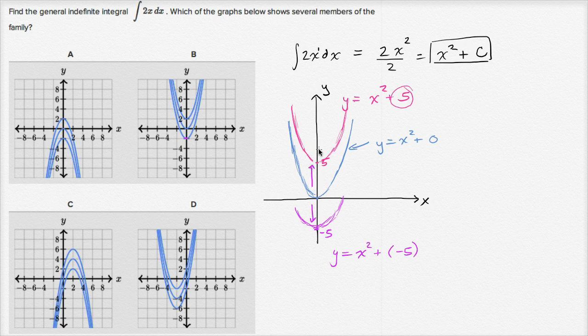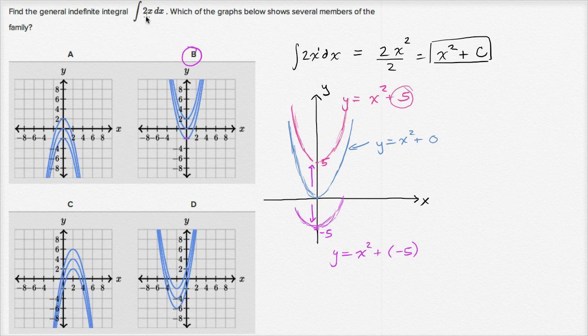So you would shift by the constant. If it's a positive constant, you're going up. If it's a negative constant, you are going down. So b is definitely the class of solutions to this indefinite integral. You take any of the functions that are represented by these graphs, you take their derivative, you're going to get two x.